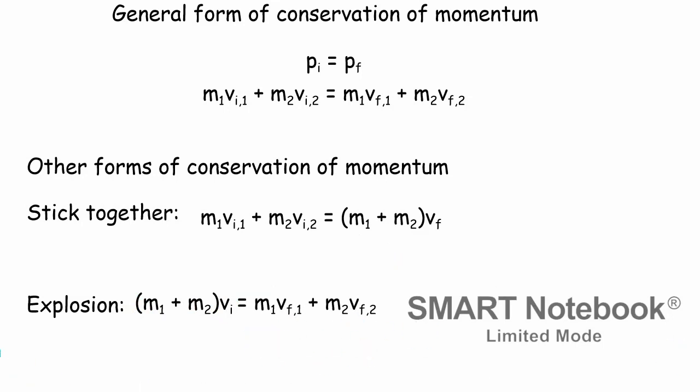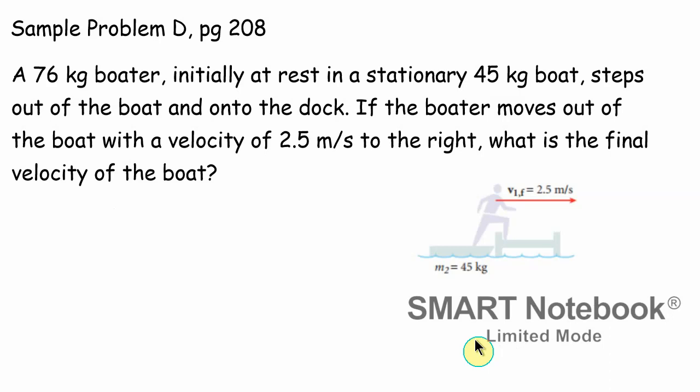Let's see if we can apply this to a situation. So here we have, this is sample problem D in your textbook on page 208. So if you want to get out your PDF and take a look at this, now here's a boater and they're stepping off of the boat onto a dock. And the picture shows you that the boater is going to the right at two and a half meters per second. And obviously the boat is going to have recoil because the person is pushing against the boat with their foot. That force is pointing to the left. So the boat is going to go back to the left. So we're going to attempt to account for that using conservation momentum. We're going to find out what's the final velocity of the boat.